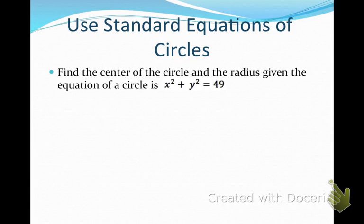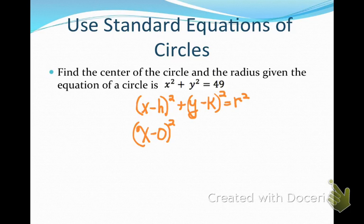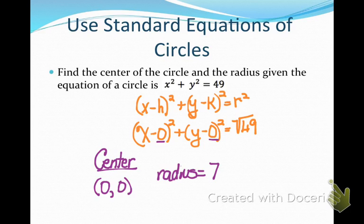Find the center and radius given the equation x squared plus y squared equals 49. Since it's just x squared plus y squared, the center is at the origin, (0, 0). Taking the square root of 49 gives a radius of 7.